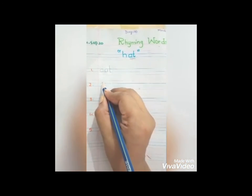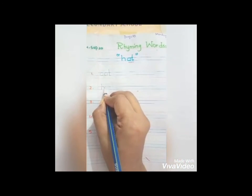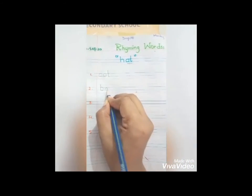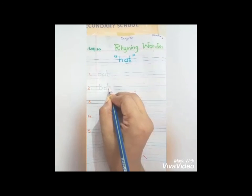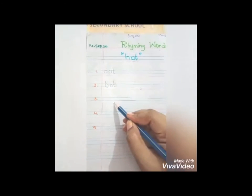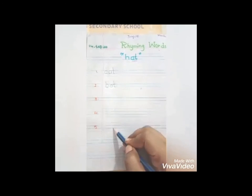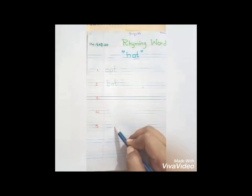What will we make as the second rhyming word? Bat — b-a-t — bat. The same ending sound. And three rhyming words you will make yourself with your mom's help.